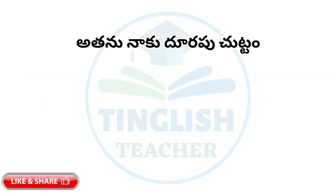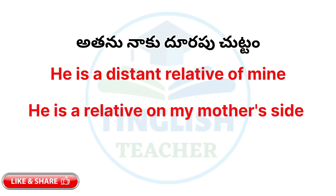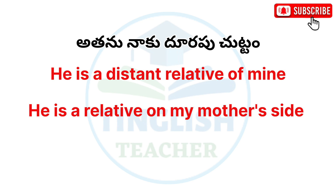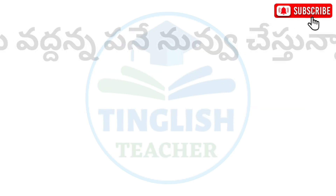Sentence number three: There are many people who have not done it. In English: 'He is a distant relative of mine.' A distant relative is a distant relative. For example: 'He is my elder brother' or 'He is my younger brother.'